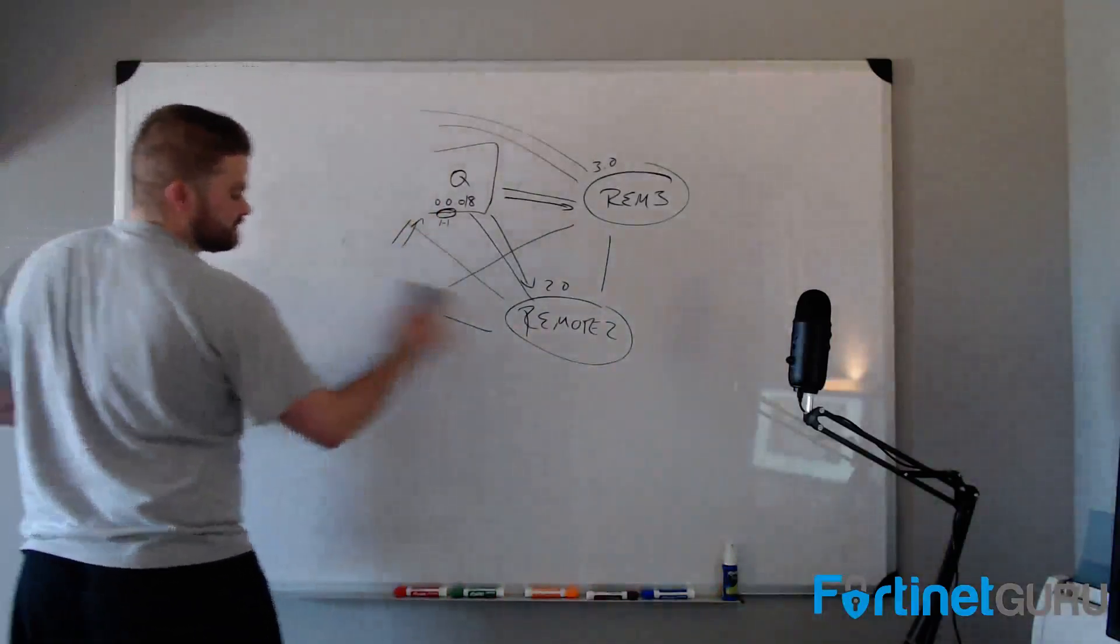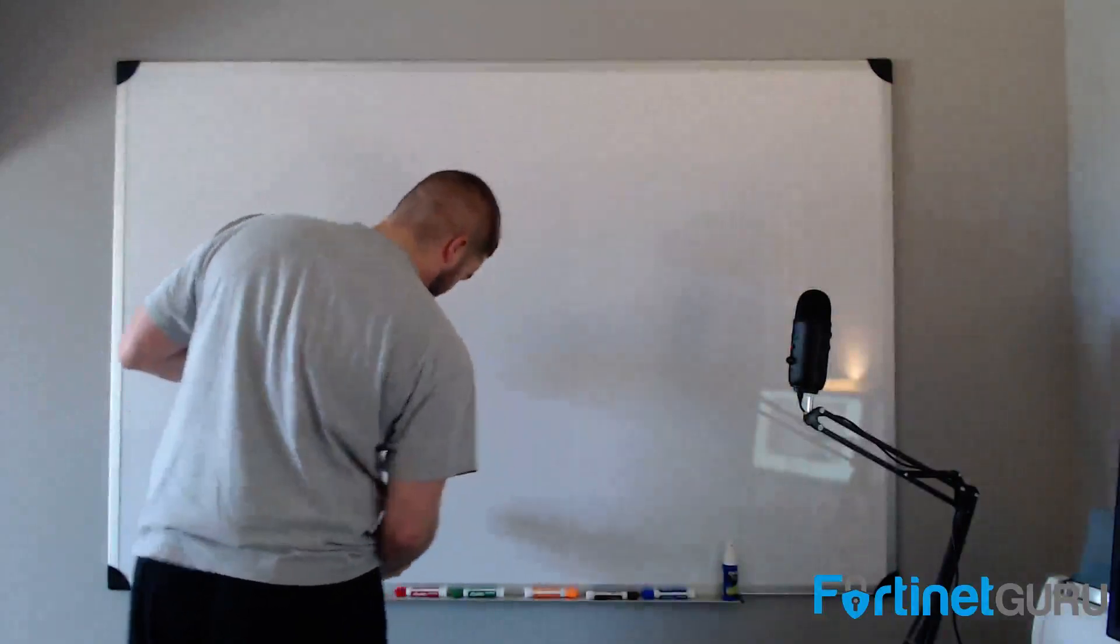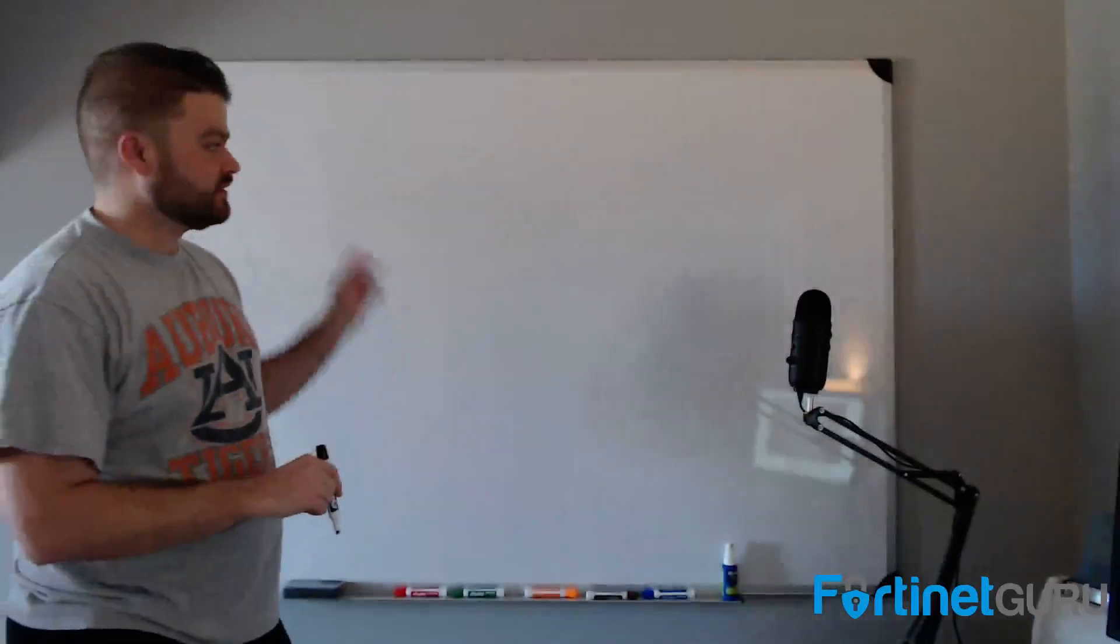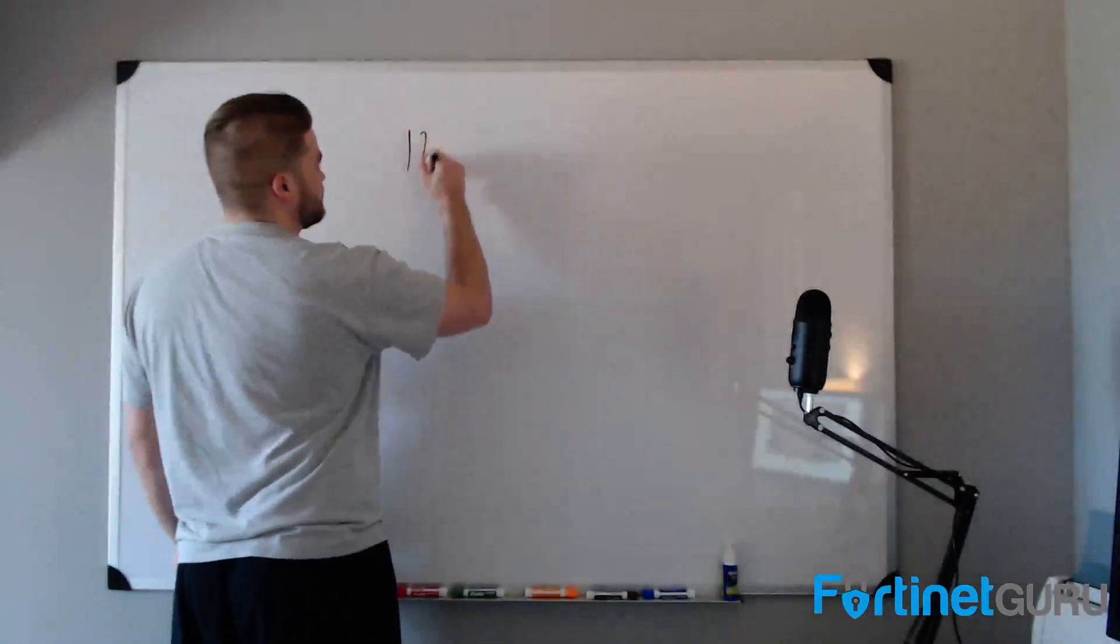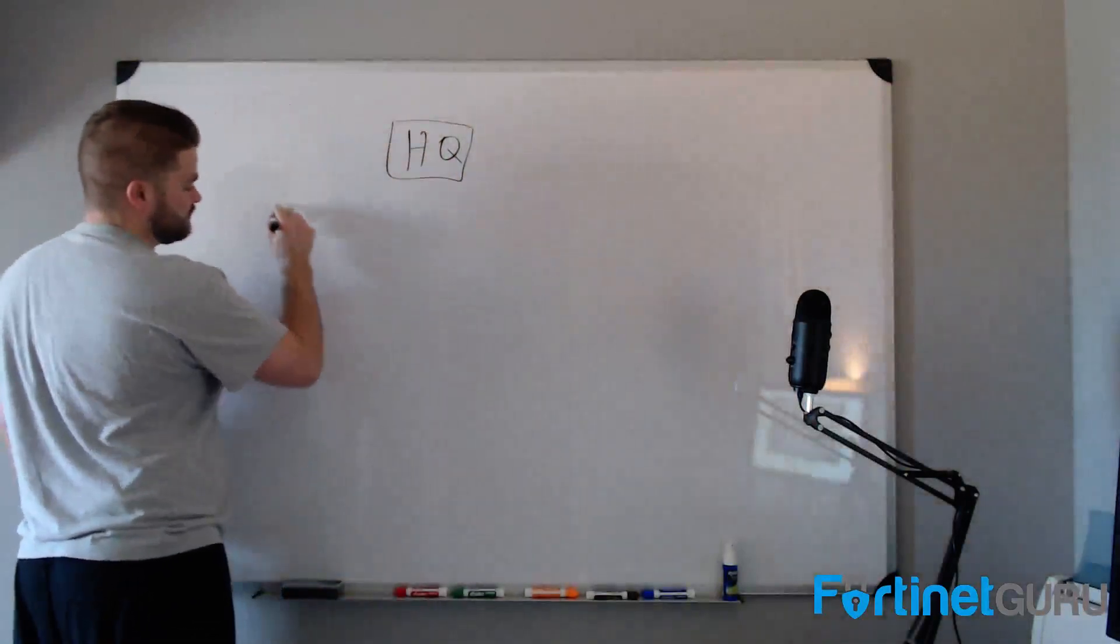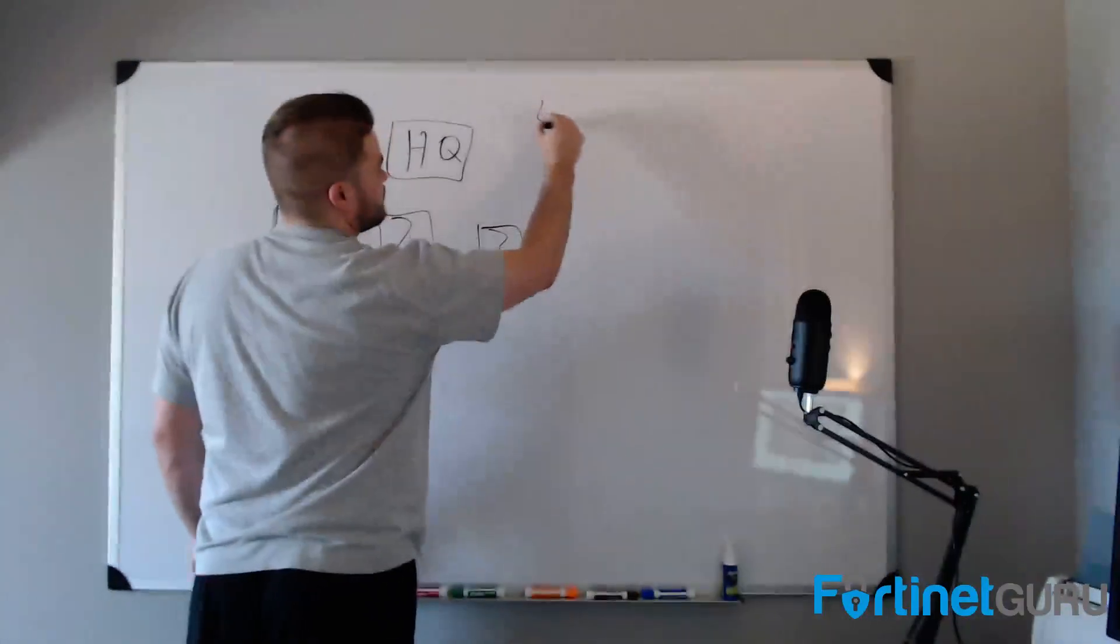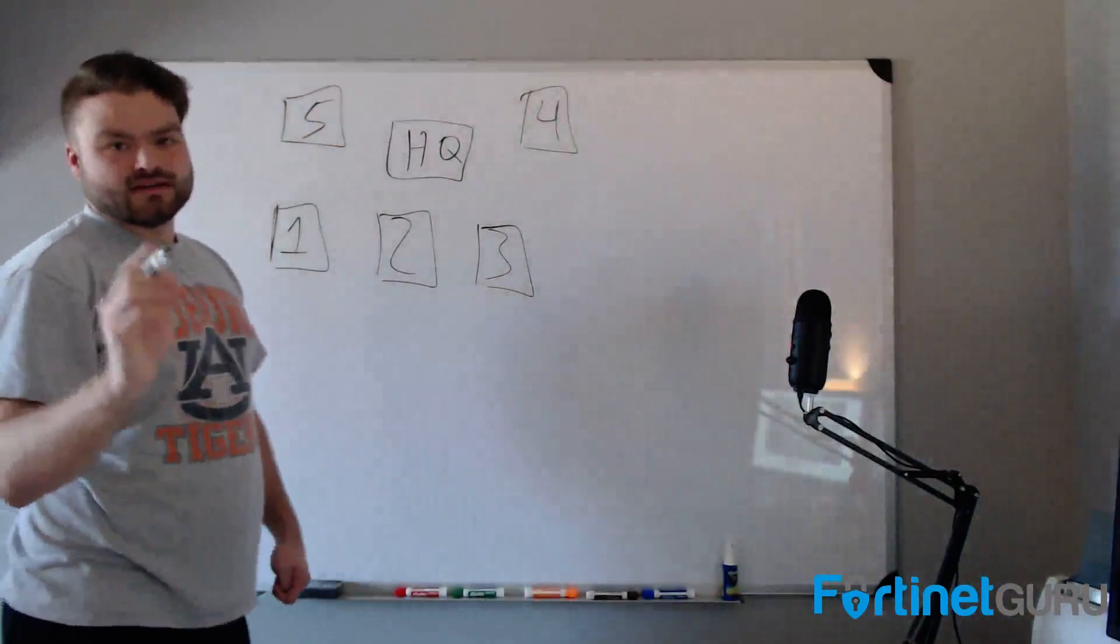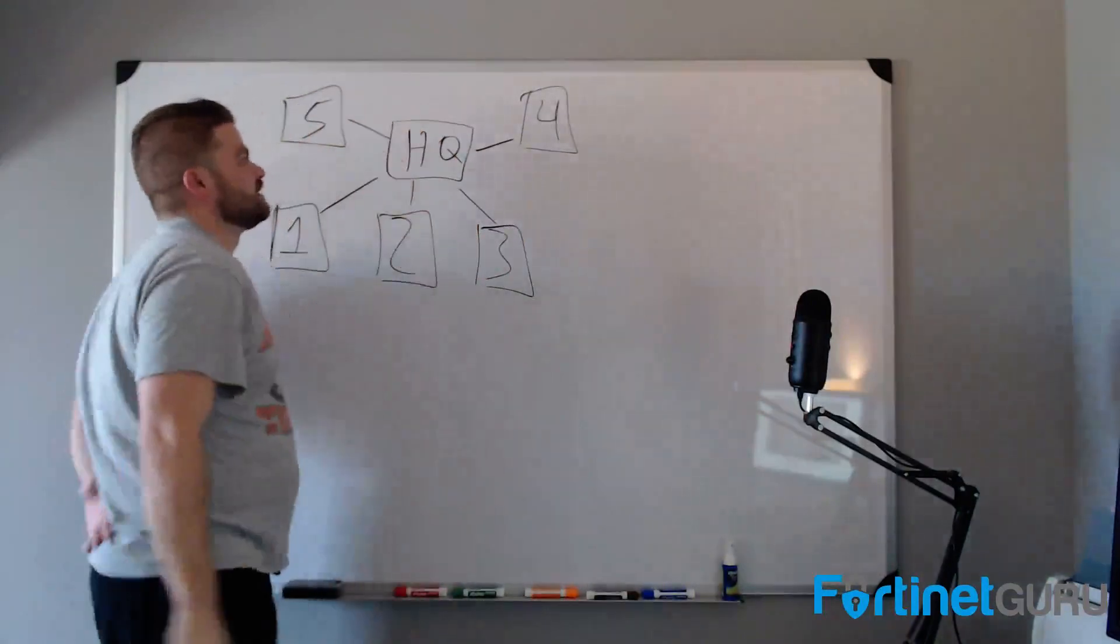Now, ADVPN leverages some cool features in the FortiGate as well as a dynamic routing protocol BGP specifically to do a full mesh configuration automatically. What that means is you have your HQ and then you have remote site one, remote site two, three, four, five. Each one of these sites has an IPsec tunnel up to HQ.